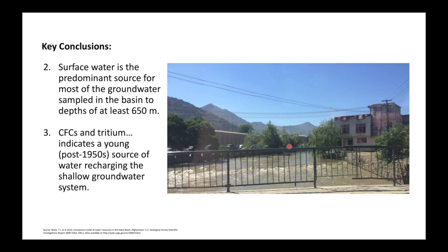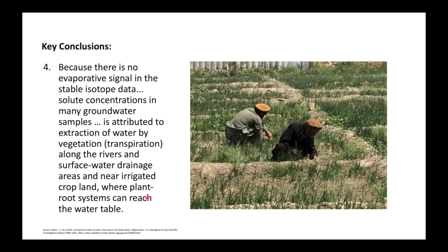This means surface water is the predominant source for most groundwater sampled in the basins to a depth of at least 650 meters. In the Kabul River basin it's not so much mountain front recharge or precipitation — most is coming from surface water. Another interesting finding is that most of this water is fairly young, all post-1950s.